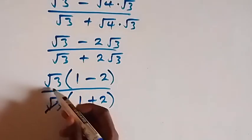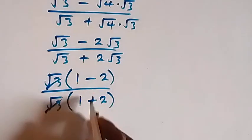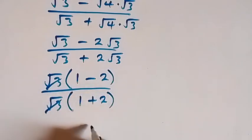And here, √3 cancels each other. Then we have 1 minus 2, that's -1, over 1 plus 2, that's 3.